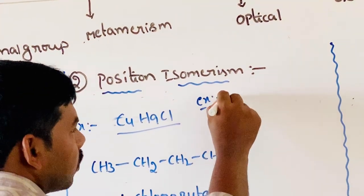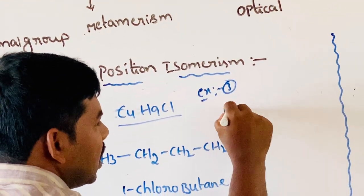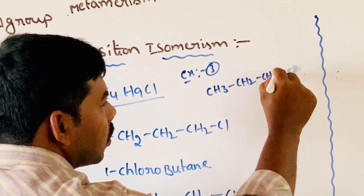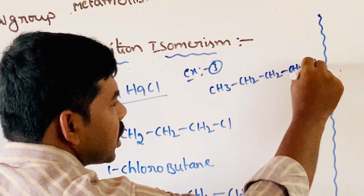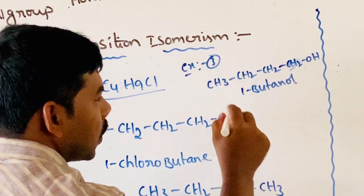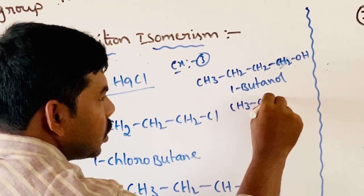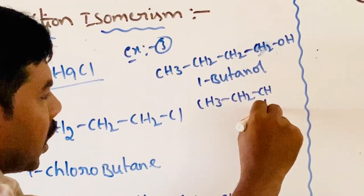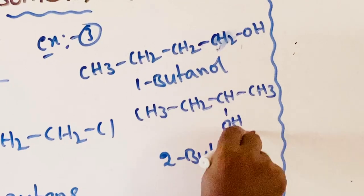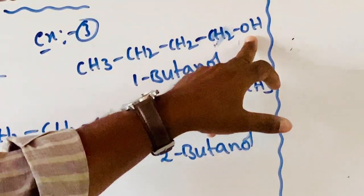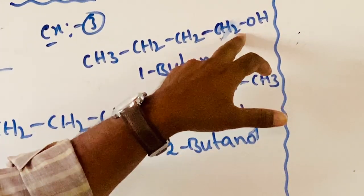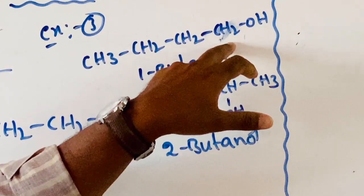Another example: C4H9OH. First structure: CH3-CH2-CH2-CH2-OH — this is 1-butanol, with the alcohol group on the first carbon. Second structure: CH3-CH2-CHOH-CH3 — this is 2-butanol, with the alcohol group on the second carbon. Different positioning of the functional group — this is position isomerism.